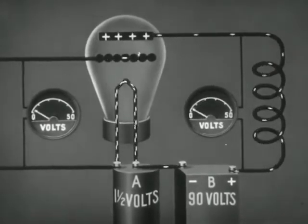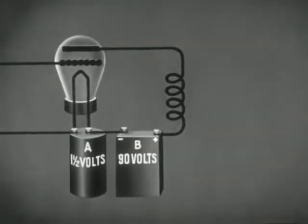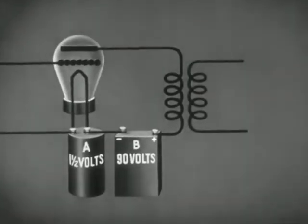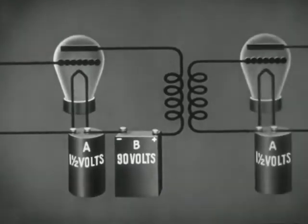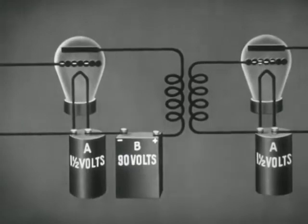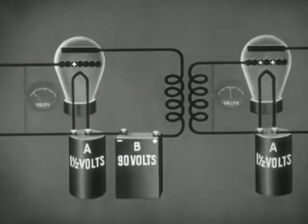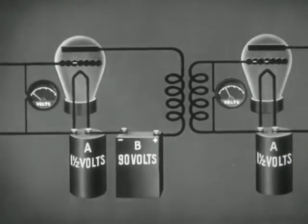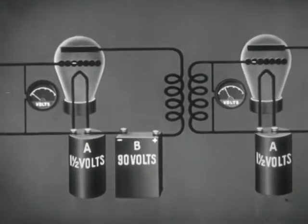These voltage variations in the primary coil are transferred by induction to the secondary of the transformer, which is connected in the grid circuit of the next tube. Thus, the small changes in voltage on the grid of the amplifying tube have brought about large variations in the voltage impressed upon the grid of the next tube. Thus, we can say that the tube has acted as an amplifier.